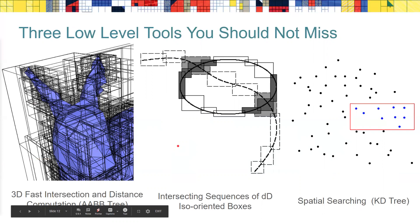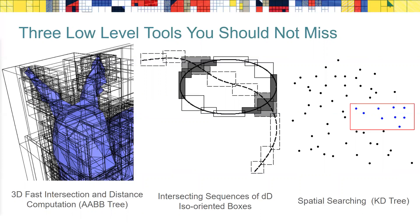The second tool is not a data structure but an algorithm. It takes one or two sets of axis-aligned arbitrary-dimensional bounding boxes and applies a user-provided callback on all pairs of boxes that overlap. For example, if the boxes are bounding boxes of faces of a triangle mesh, you can easily test for self-intersections. The third tool, spatial searching, is depicted only in 2D but works in arbitrary dimensions. It enables finding k-nearest neighbors in a higher-dimensional point cloud and performing range queries — which points lie in a query rectangle or sphere. It is essentially a KD-tree.